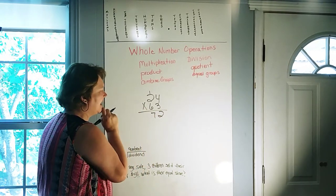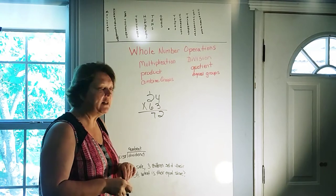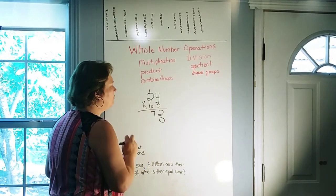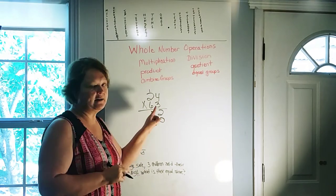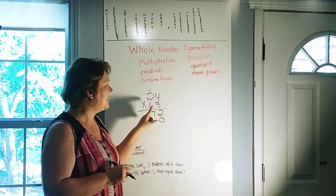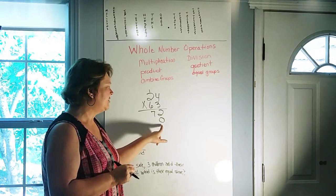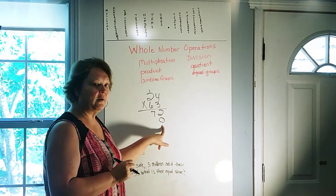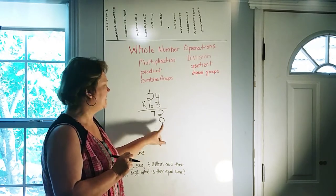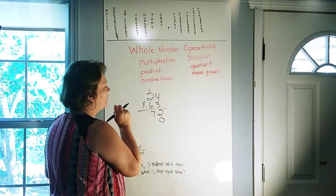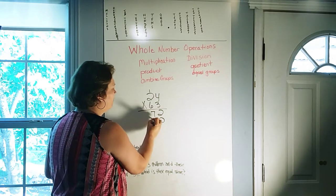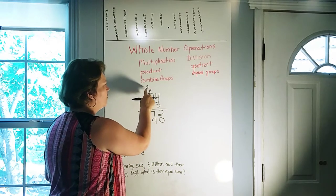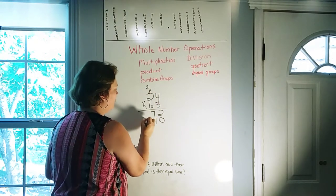Now we're going to multiply times 6, and because 6 is in our tens place, what we need to do is we need to put a 0 placeholder in our ones place because we're not multiplying times ones now. We're multiplying times tens, so there won't be a digit in that ones place. So we'll put a 0 in to hold it so that we can keep our numbers lined up. So 6 times 4 is 24. We'll put our 4 down. We'll carry our 2. 6 times 2 is 12, plus 2 would be 14.